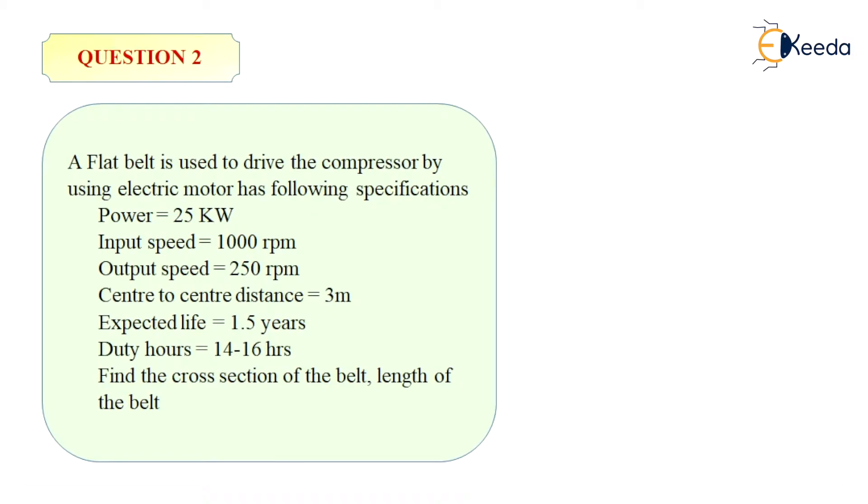Power is given as 25 kW. Input speed 1000 rpm. Output speed 250 rpm. Centre to centre distance 3m. Expected life 1.5 years. Duty hours that is 14 to 16 hours. Find the cross section of the belt and length of the belt.